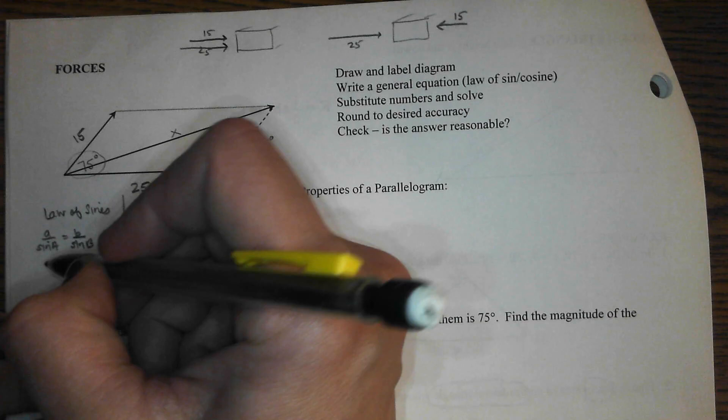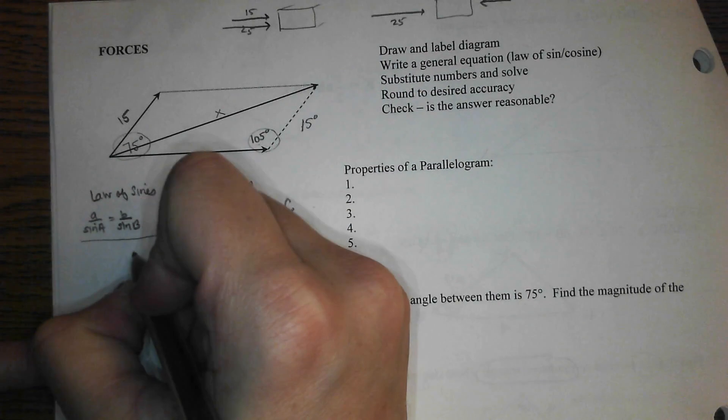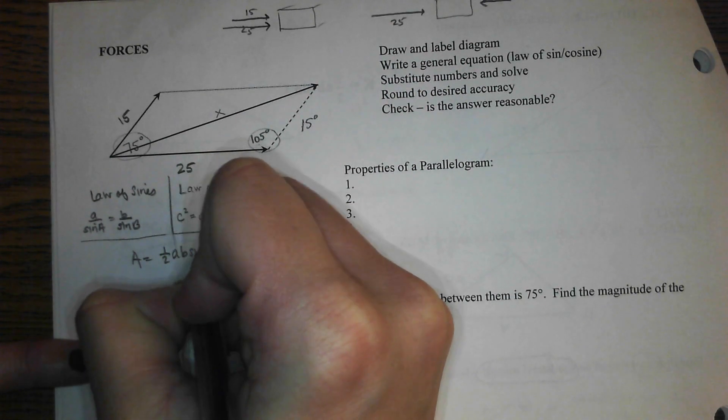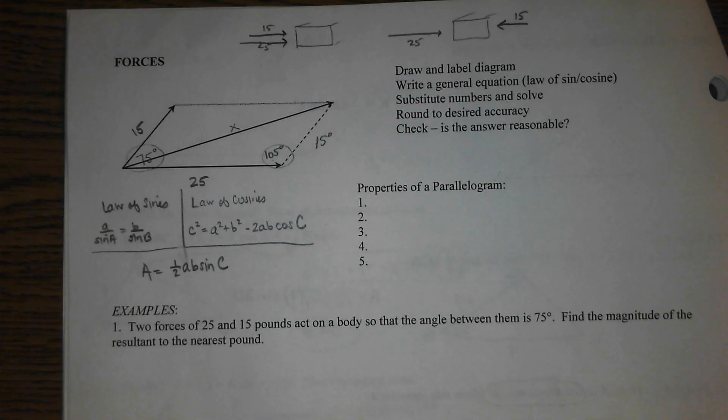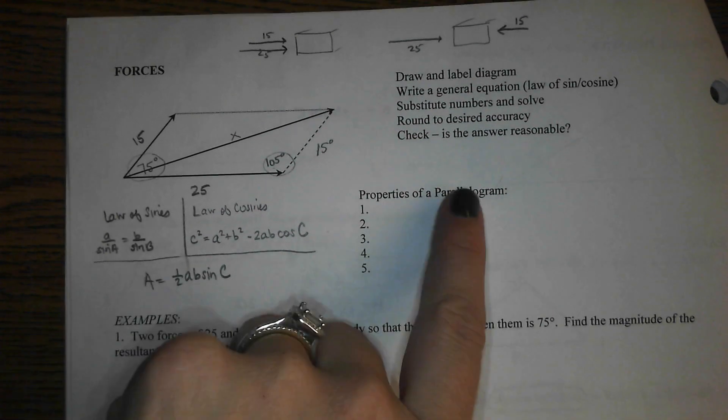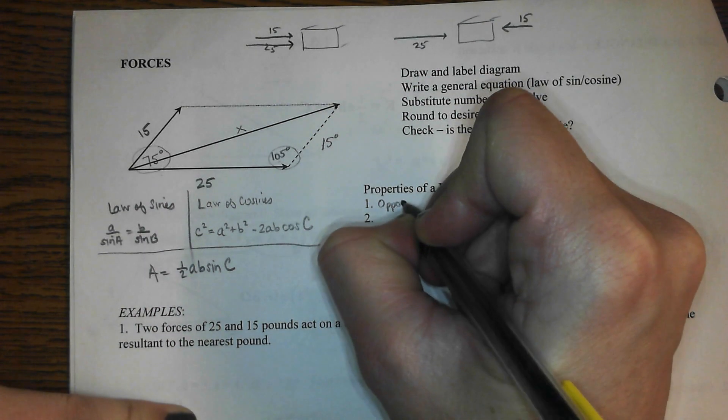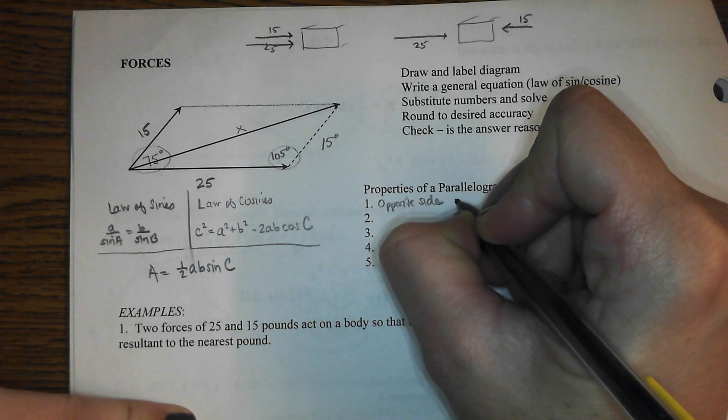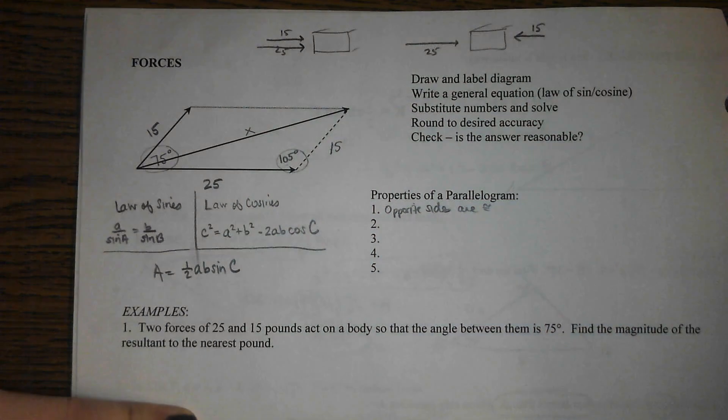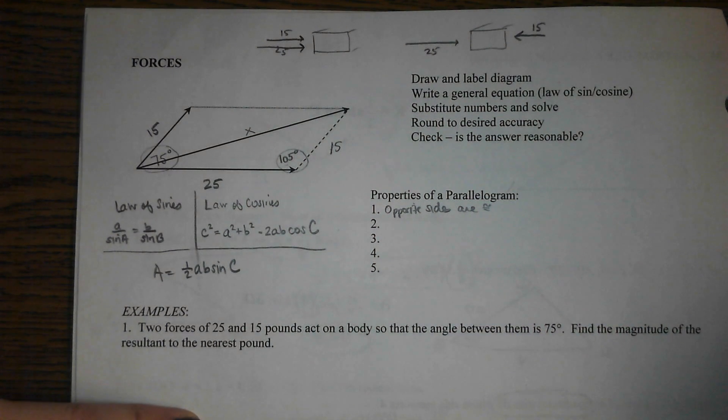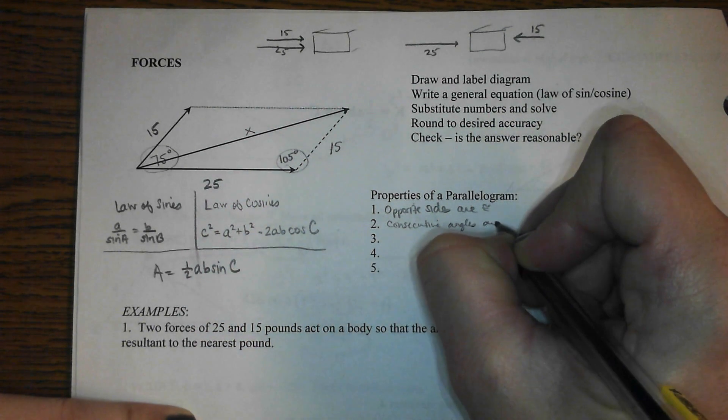cosine of the angle that's opposite the side that stands alone. And then I don't know that this is going to really come in play today, but as long as we're just getting our three formulas on the table, your new area formula is 1/2 AB sine C. So parallelograms have a gazillion properties. The main one that we just used is that opposite sides are congruent.